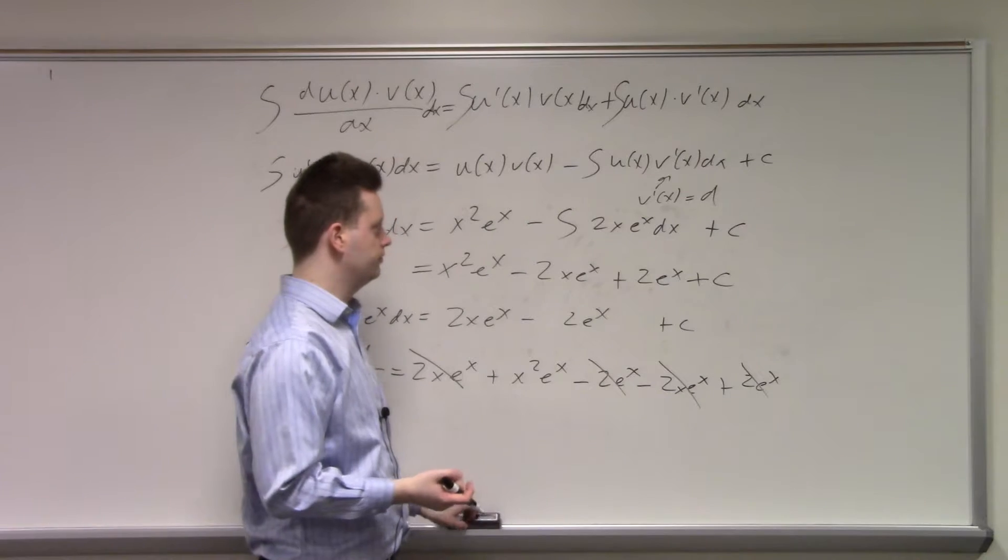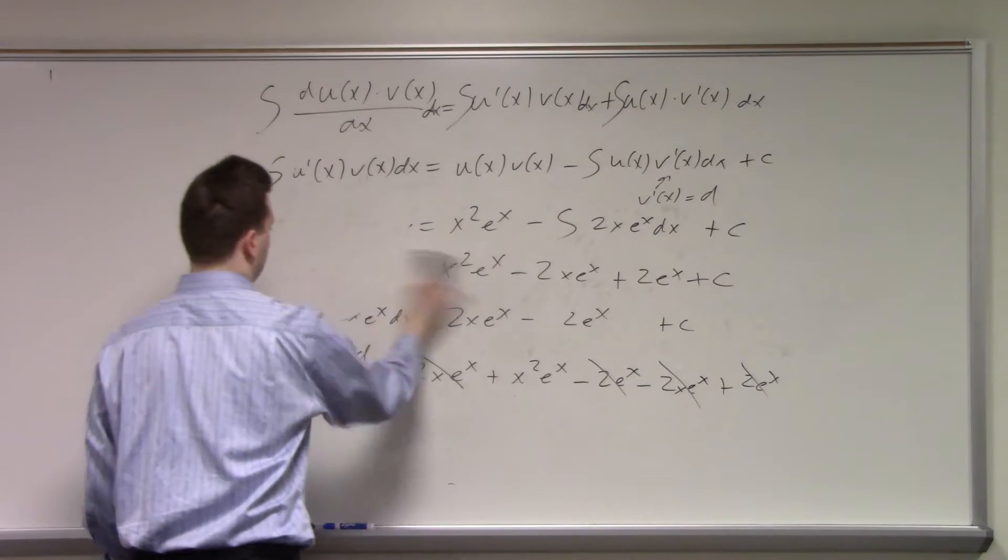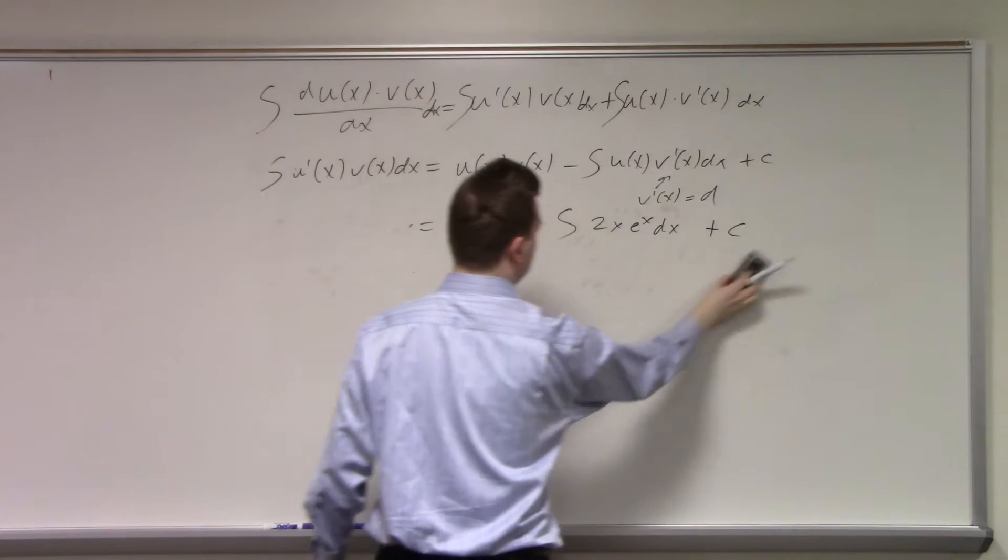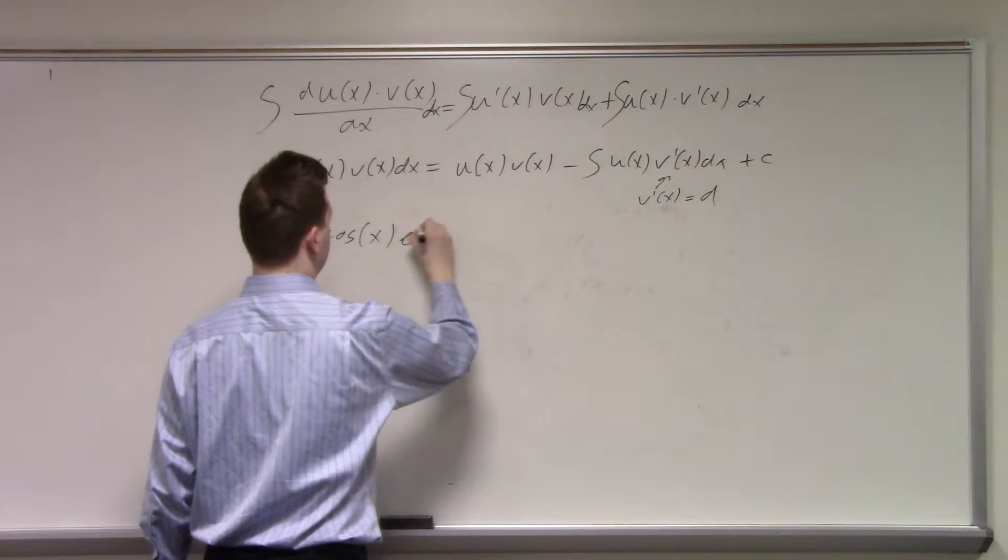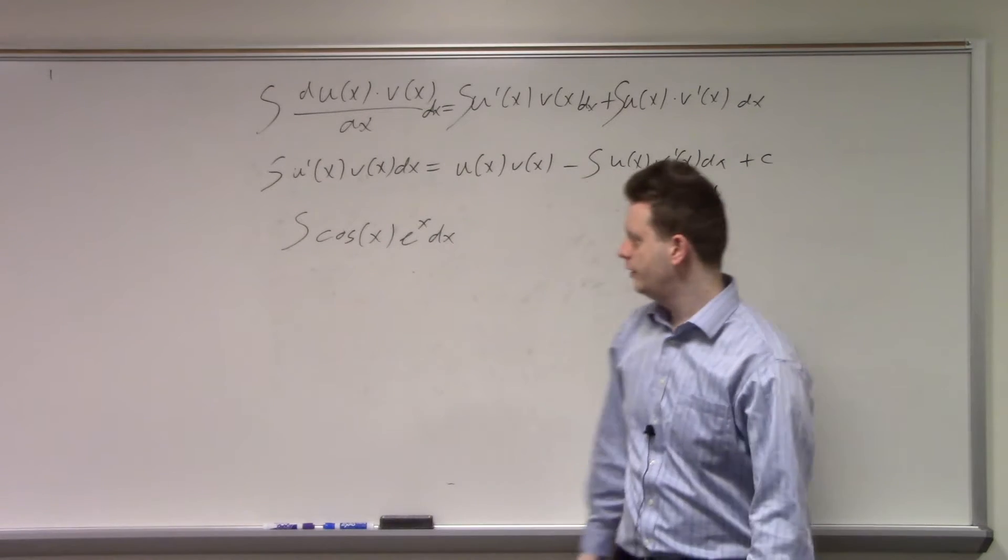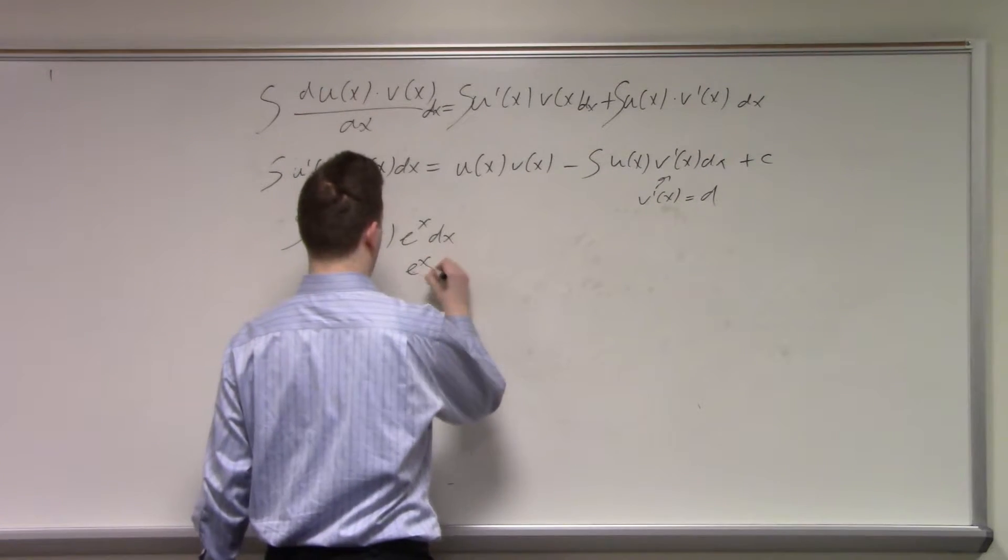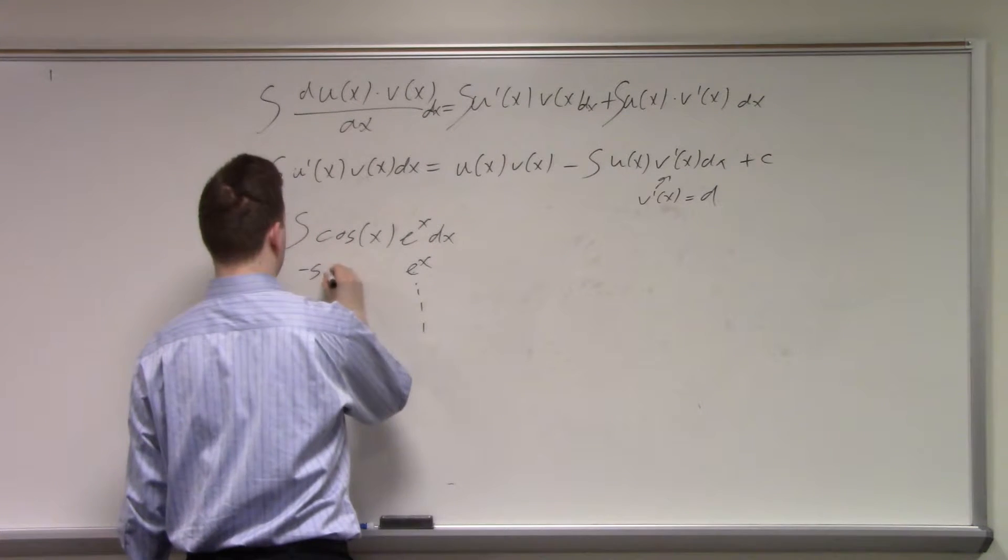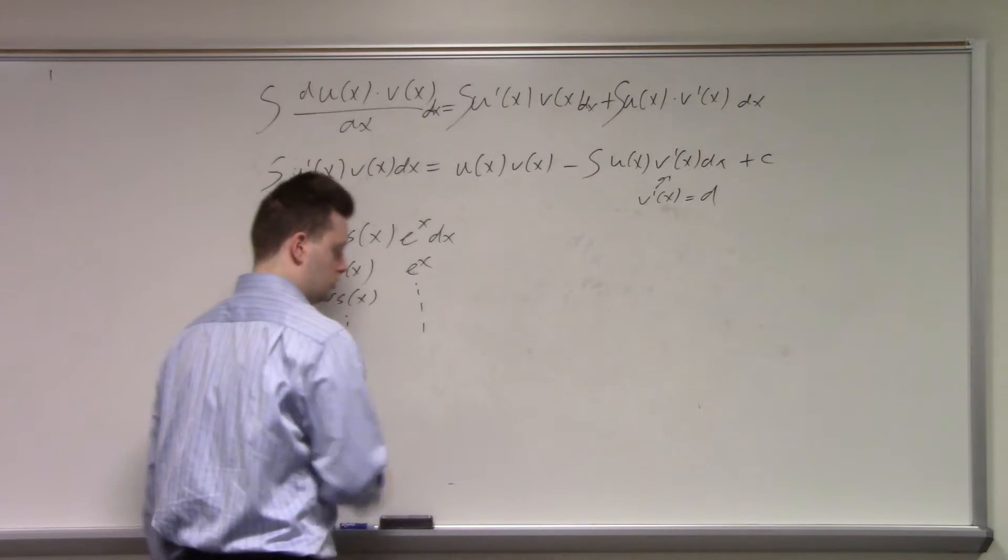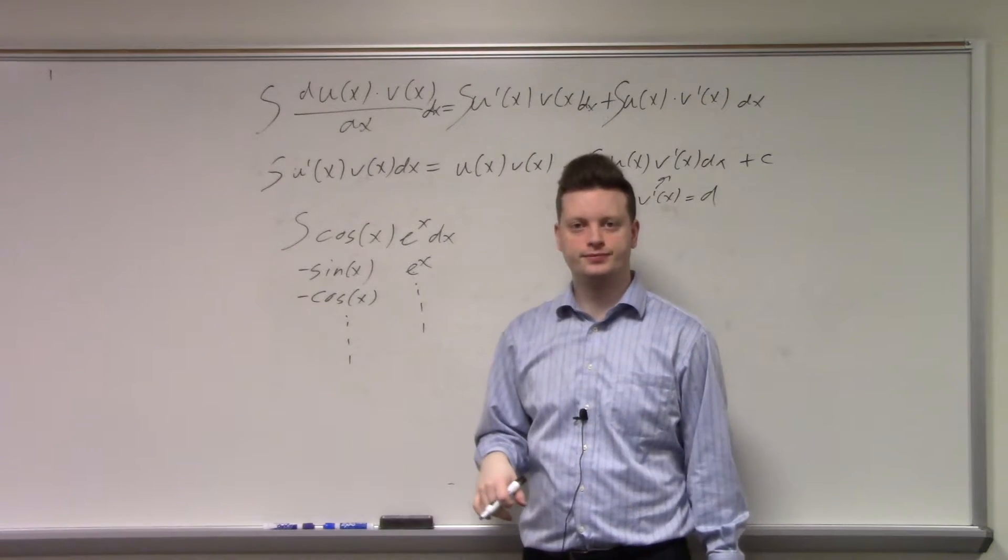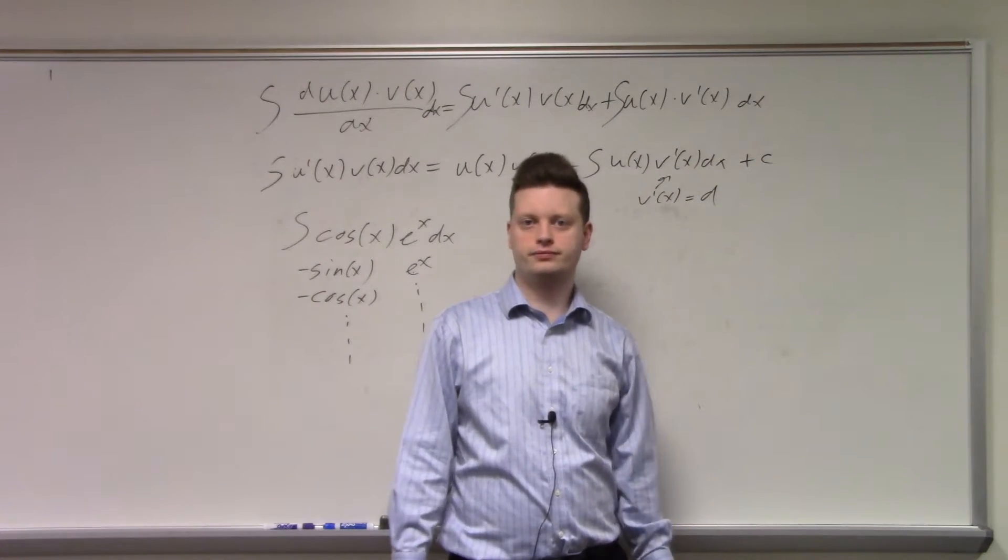Let's do a second example. In the second example, unfortunately, this will not work. Let our second example be the integral of the cosine of x times e^x dx. Which one is u and v? Let's do the same thing we just did. Well, e^x remains e^x. The derivative of the cosine is minus the sine. Then I get cosine, and it keeps on going, flipping between cosine and sine. This never goes to a constant. This never simplifies. What do I do in that case?